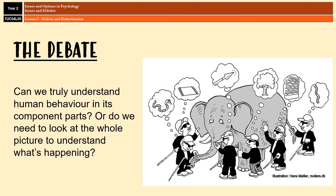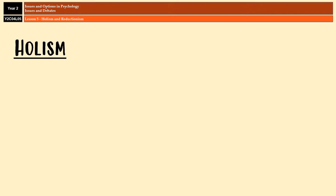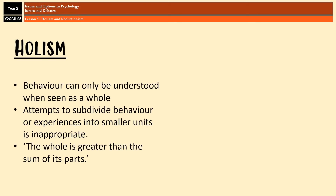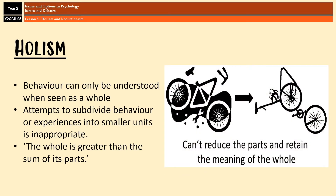Can we truly understand human behavior if we break it up into component parts, which is something that psychology does a lot, or do we have to look at the entire picture if we want to really understand what is happening? So let's start with Holism. Holism states that behavior can only be fully understood when seen as a whole. Any attempt to subdivide behavior or experiences into smaller units is inappropriate and effectively only leads to an incomplete or incorrect picture.